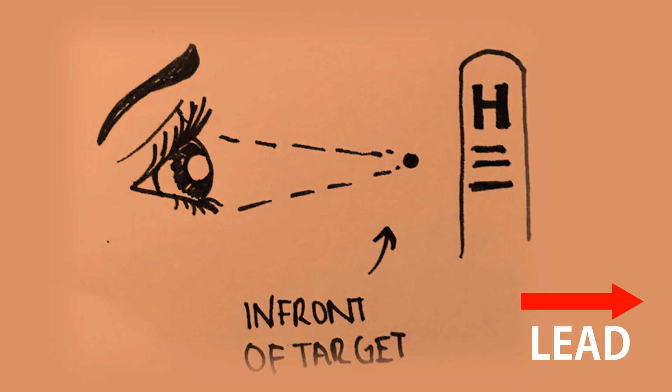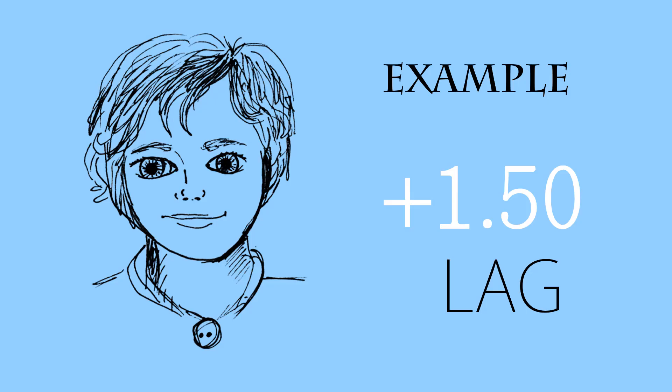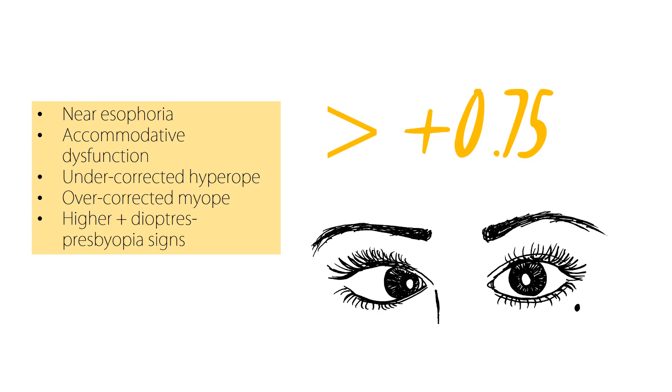When there is a lead, we are focusing in front of the target, so we are over-accommodating. For example, if we get with movement and it's neutralised with a +1.50, we know it's outside our normal range of +0.25 to +0.75, and we know it's a lag because we used plus lenses. This patient is focusing too far behind the target. All values higher than +0.75 — a lag in accommodation — may suggest near esophoria, because the convergent system tries to compensate for insufficient accommodation. It may also indicate accommodative dysfunction such as paresis or fatigue, or under-corrected hyperopia or over-corrected myopia.